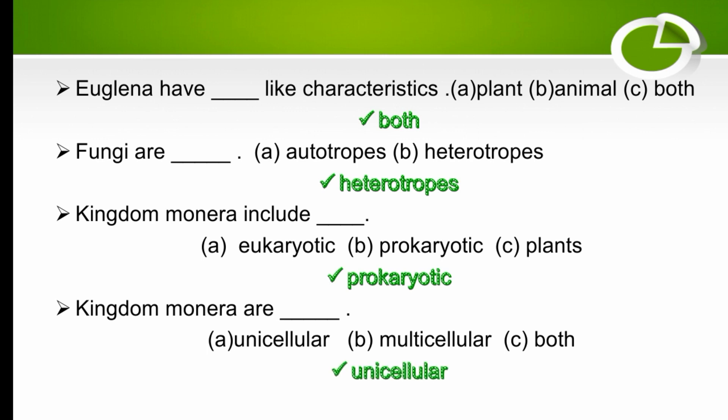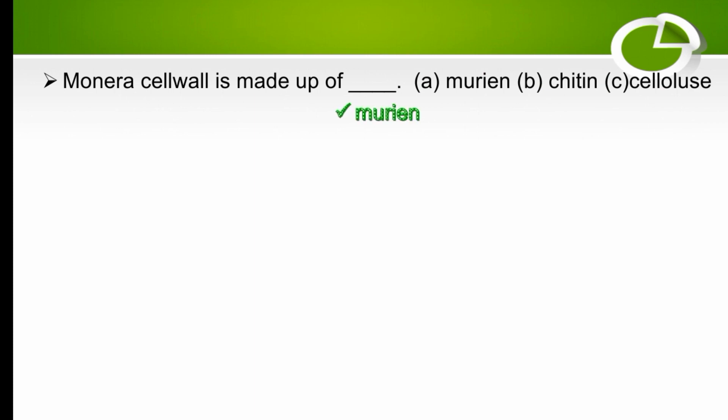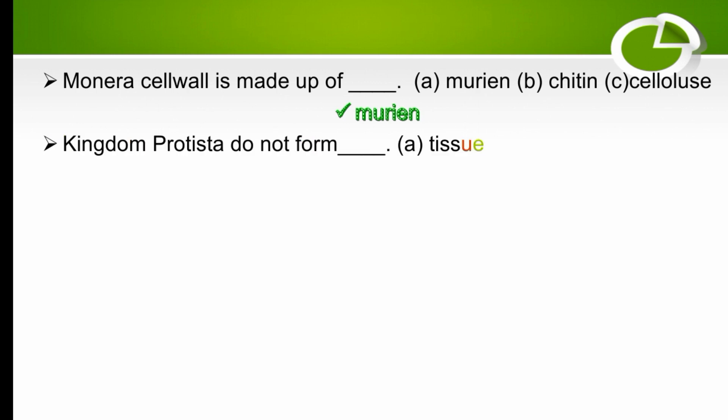Kingdom Monera are unicellular organisms — the right option is unicellular. Monera cell wall is made up of murein — the right option is murein.